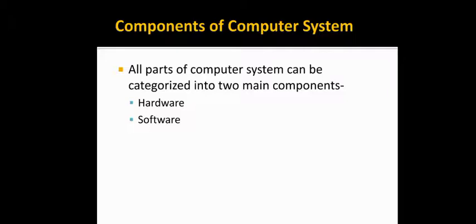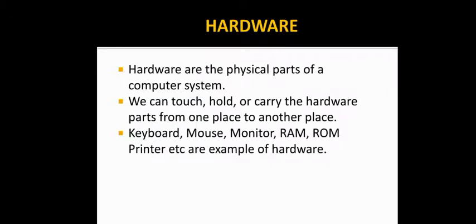Now, we will discuss about hardware. What is hardware and what are the types? Hardware are the physical parts of a computer system. We can touch, hold or carry the hardware devices from one place to another place very easily. Like keyboard, mouse, monitor, RAM, ROM, printer. All these are the examples of your hardware.